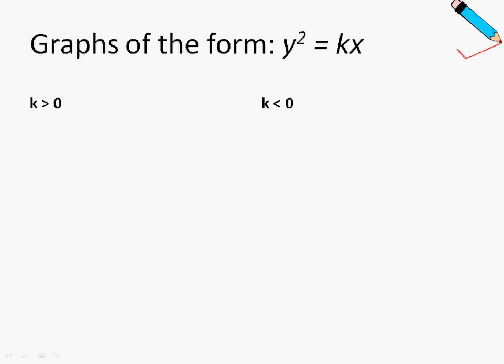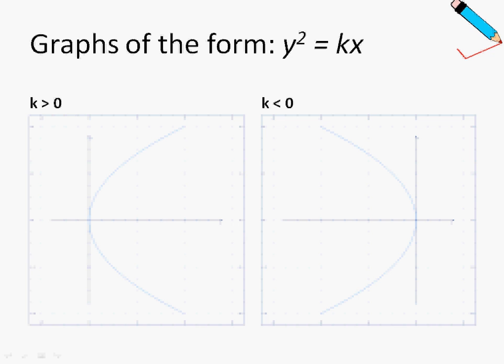The second type of graph in this chapter is in the form y squared equals kx. When k is positive the graph looks like this, and when k is negative the graph looks like this. Note that this form is different from y equals ax to the power of n: in the y-squared form, when k changes from positive to negative, it is a reflection along the y-axis, not the x-axis.